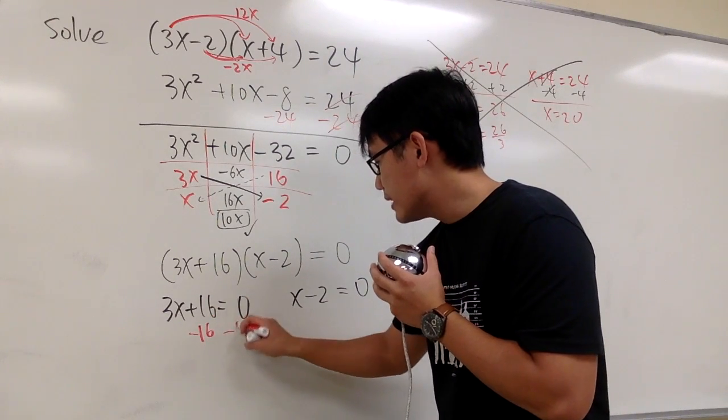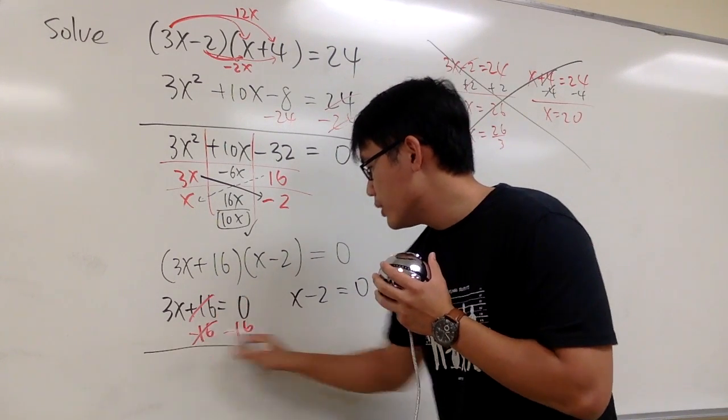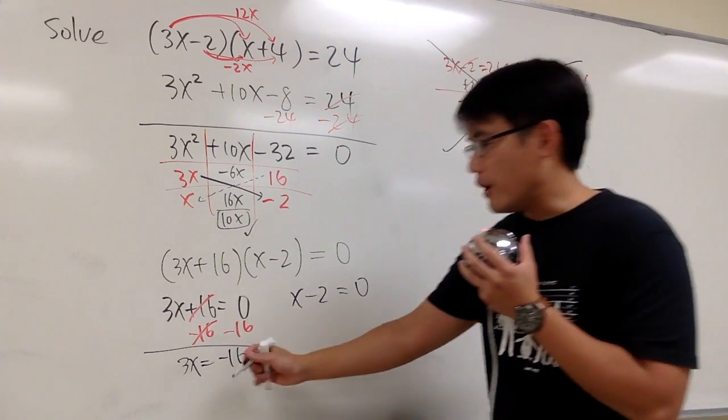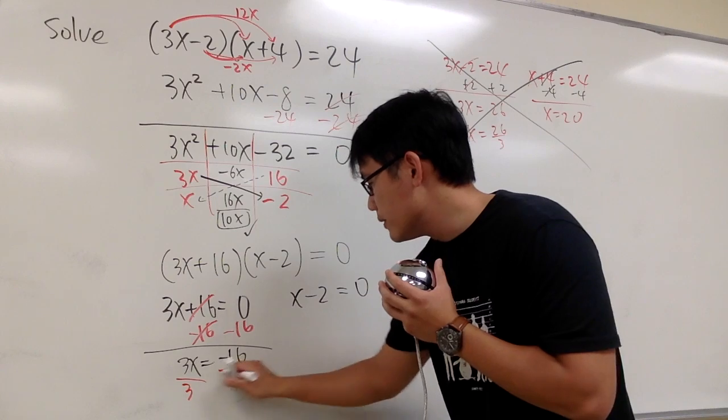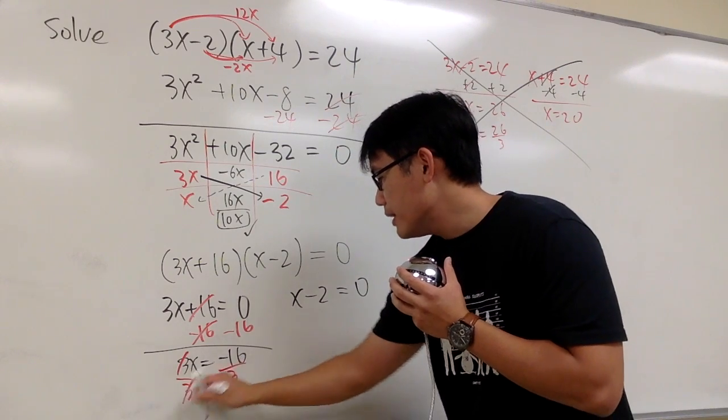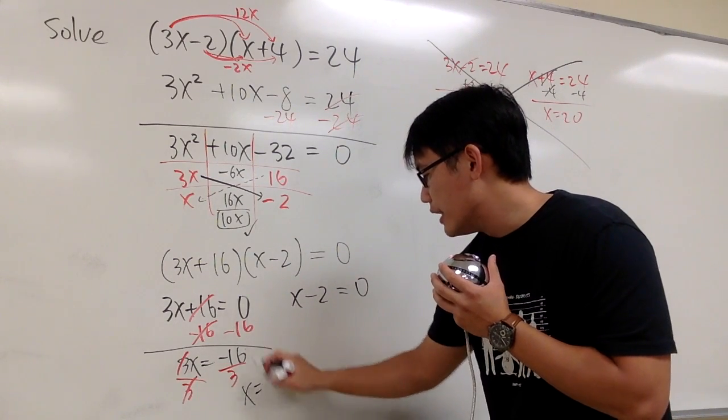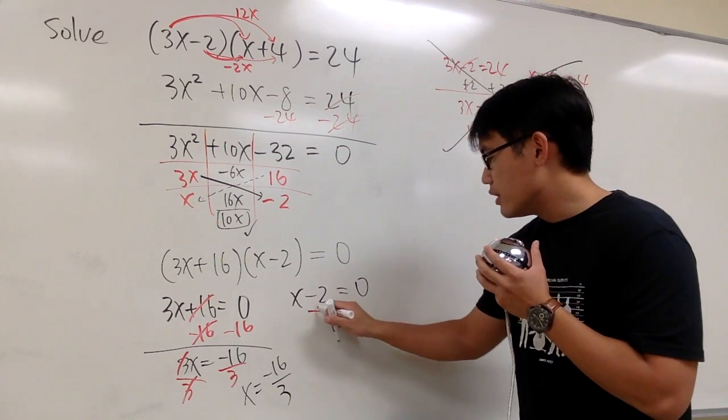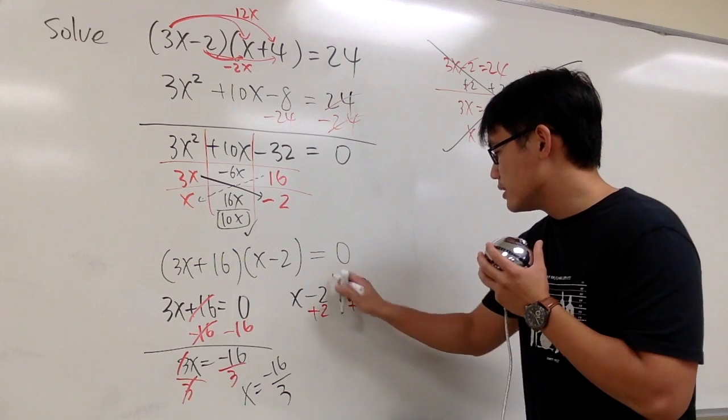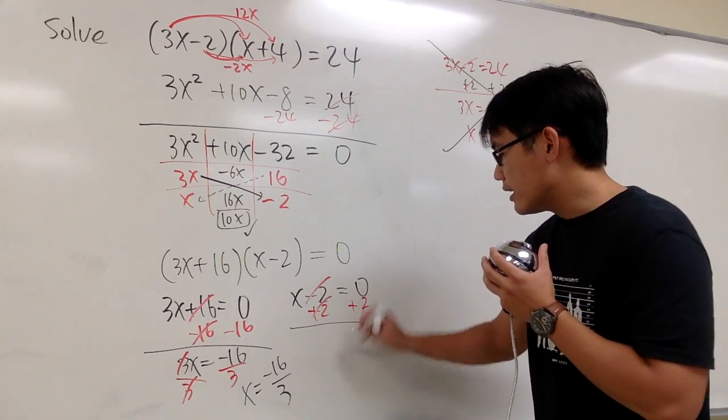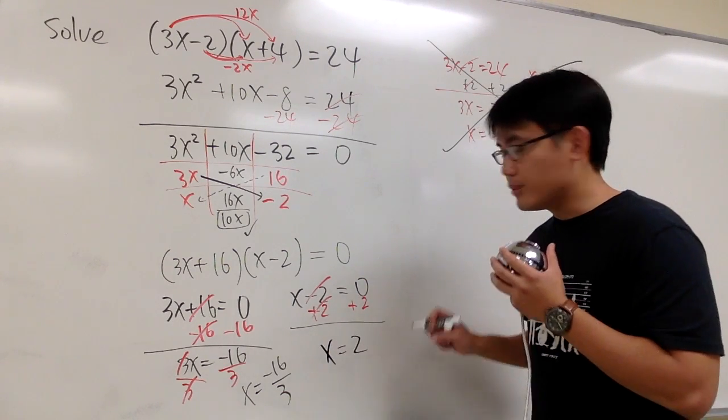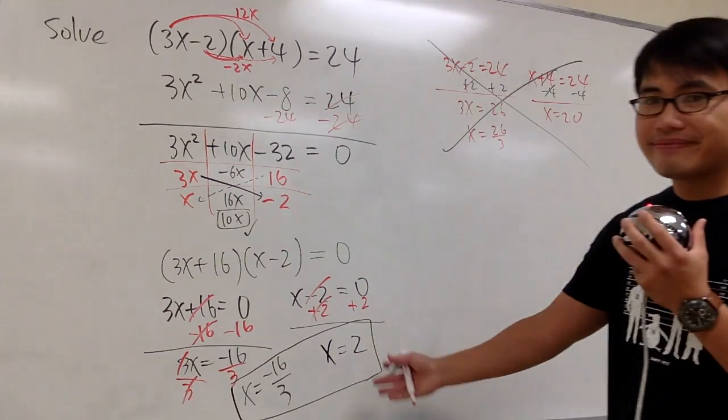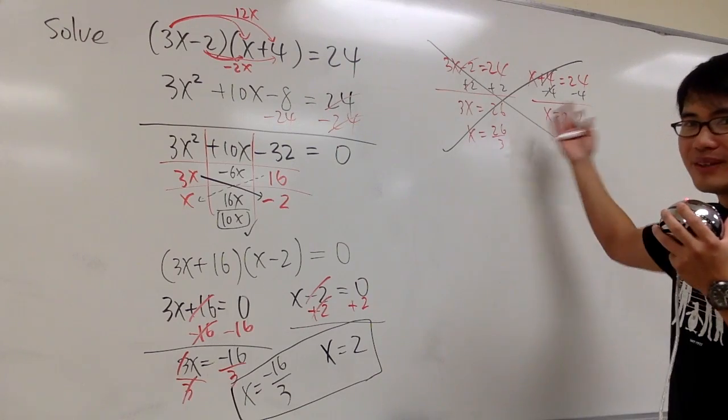So let's subtract 16 on both sides right here. And then we get 3x equals to negative 16. And we can solve for x by dividing both sides by 3. And that means x is going to be negative 16 over 3 for the first answer. And then for the second answer, we just need to add 2 on both sides. So this and that cancel, and I get x is equal to 2. So this 2 right here will be the correct answer to this question. That's it. And don't ever do this.